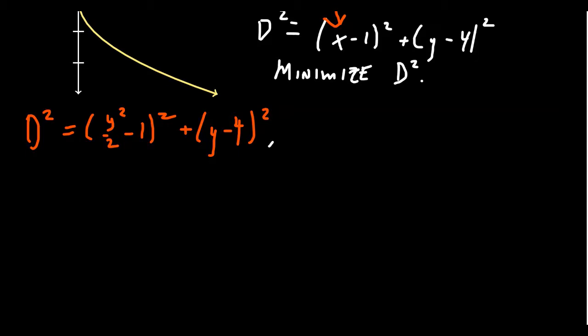If we take the derivative, you're going to end up with 2dd prime equals, let's see, by the chain rule, you're going to get 2 times y squared over 2 minus 1. Then don't forget the inner derivative, for which case you're just going to get a y. And then add to that 2 times y minus 4. And this should all equal 0.